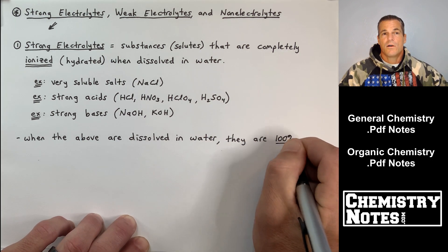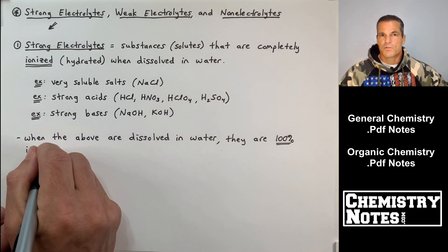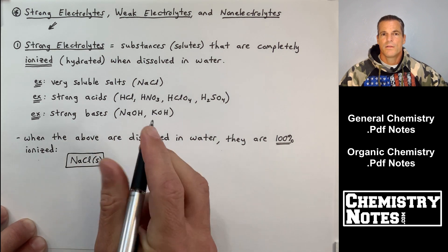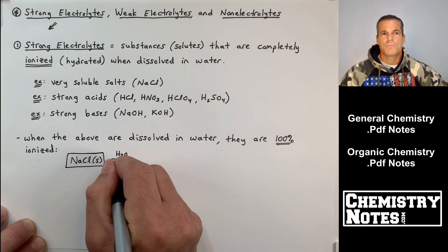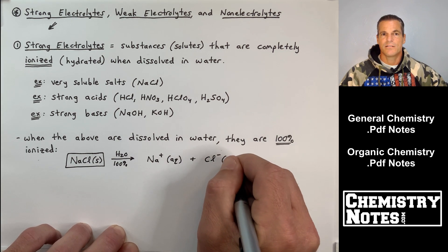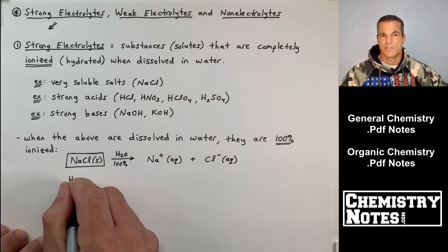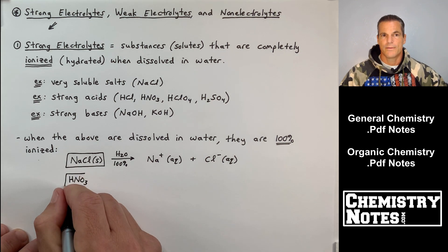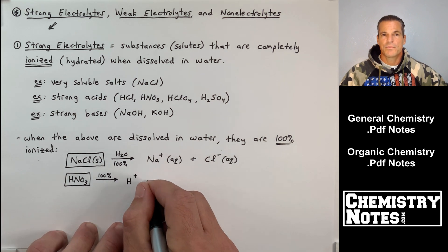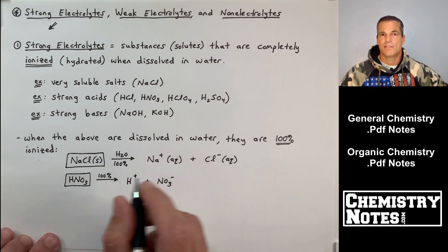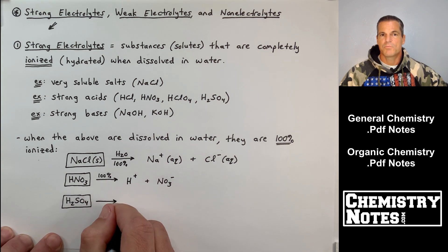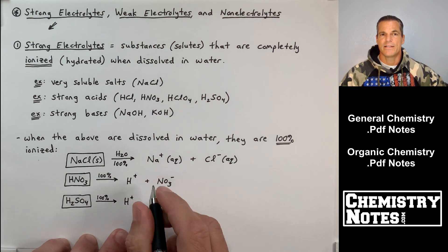So very soluble salt or a strong acid or a strong base, when those are dissolved in water, they're 100% ionized. We have none of the reactant left. The NaCl solid in water is 100% ionized into Na+ and Cl-. Likewise, HNO3, H+ and NO3-, 100% ionized.